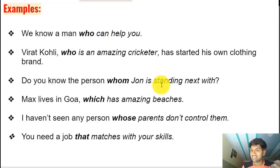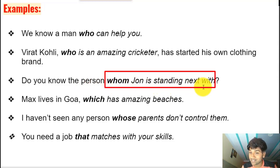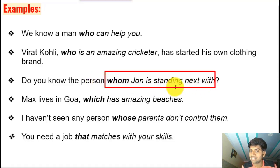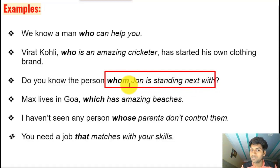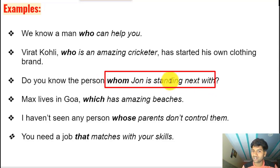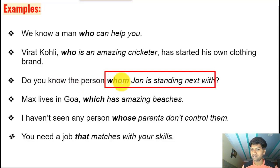'Do you know the person whom John is standing next with?' Here 'whom' is the relative pronoun coming next to the noun 'person' and identifying it. The clause 'whom John is standing next with' gives essential information. Note that 'whom' is not the subject of this clause — the subject is John. 'Whom' is working as a pronoun/conjunction, and the person it identifies is the object.